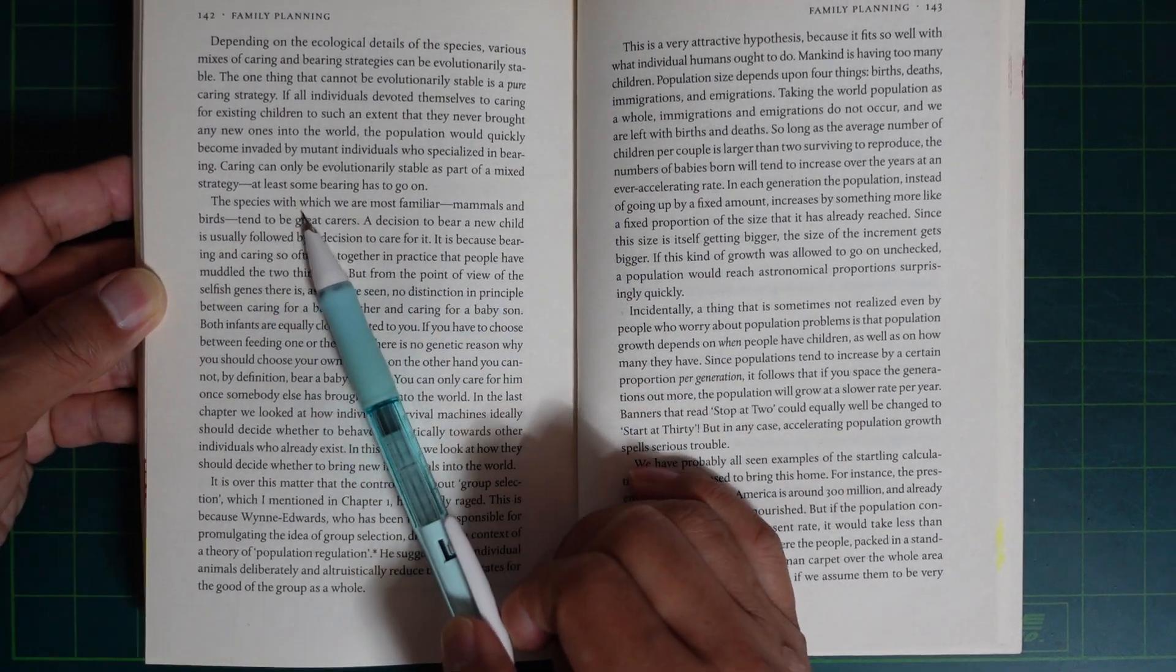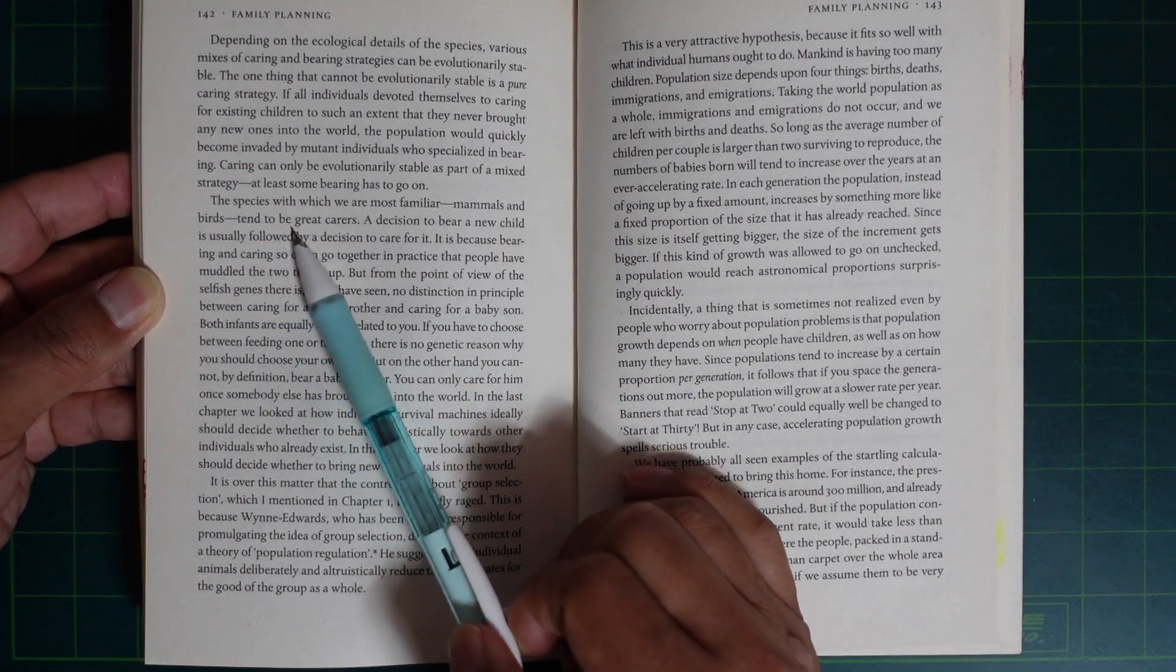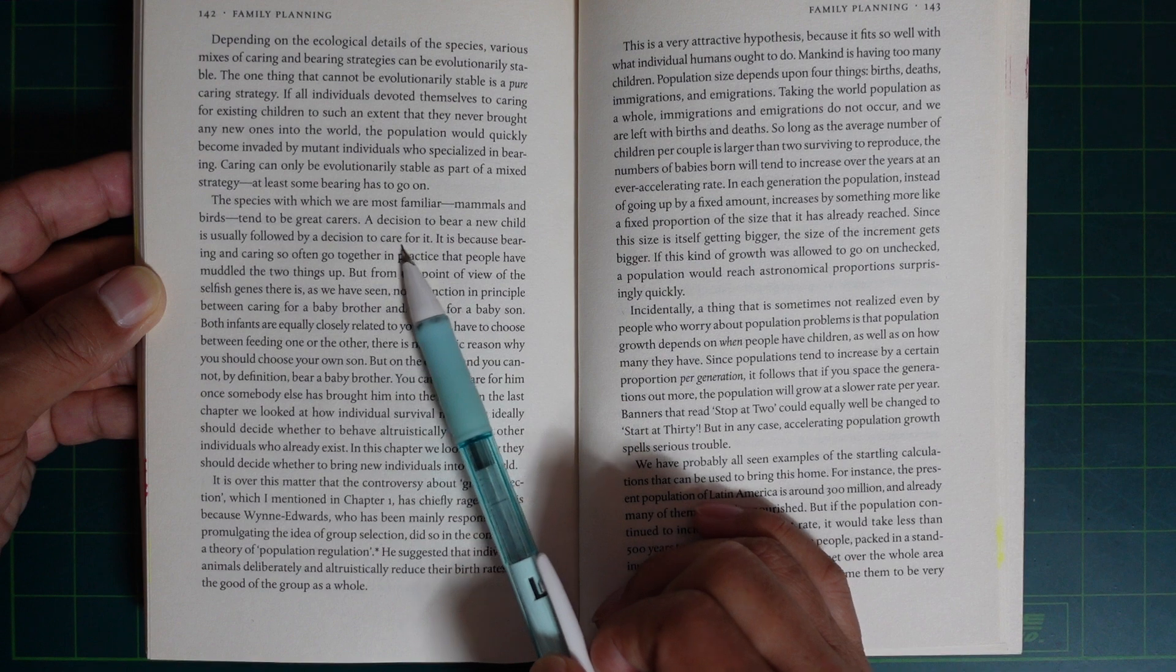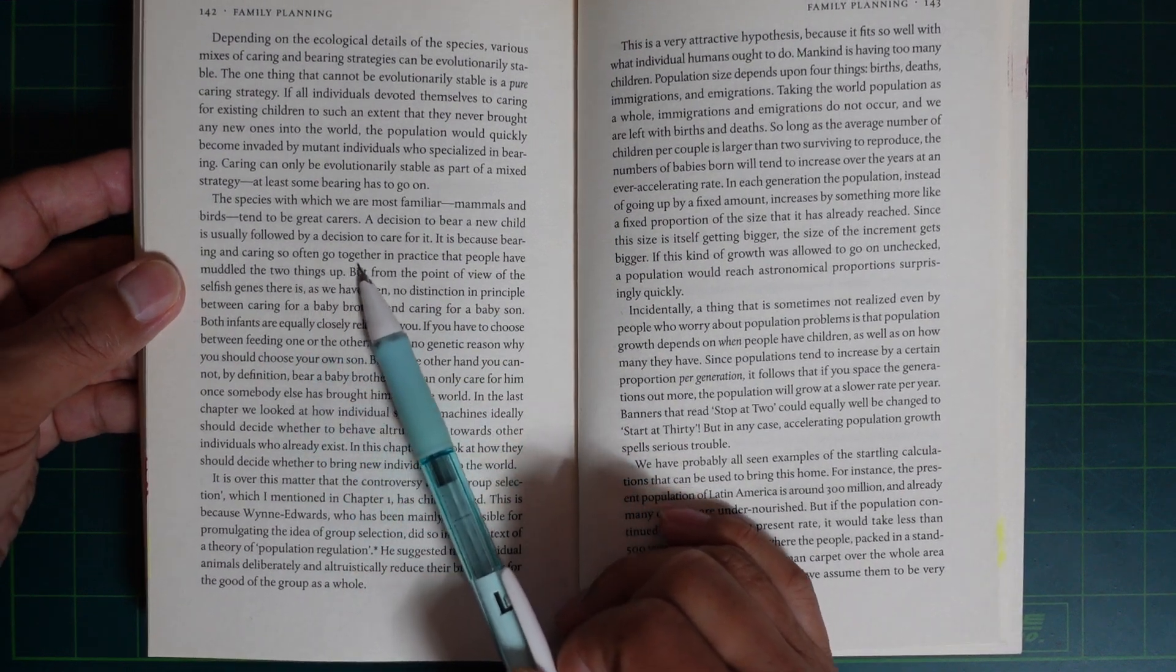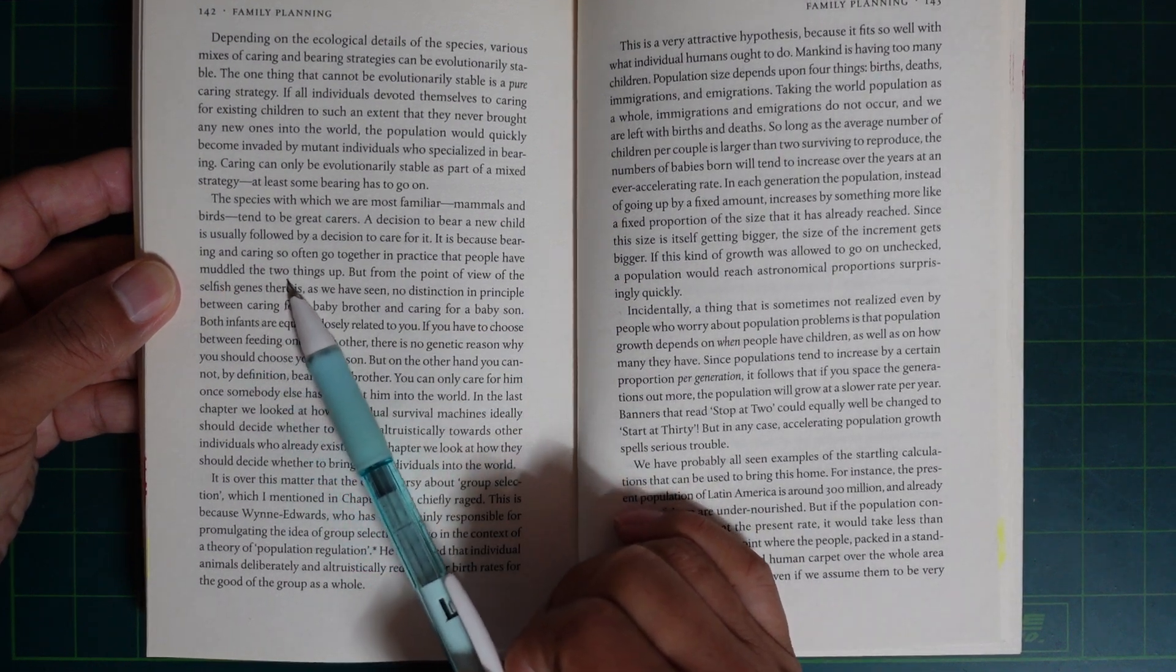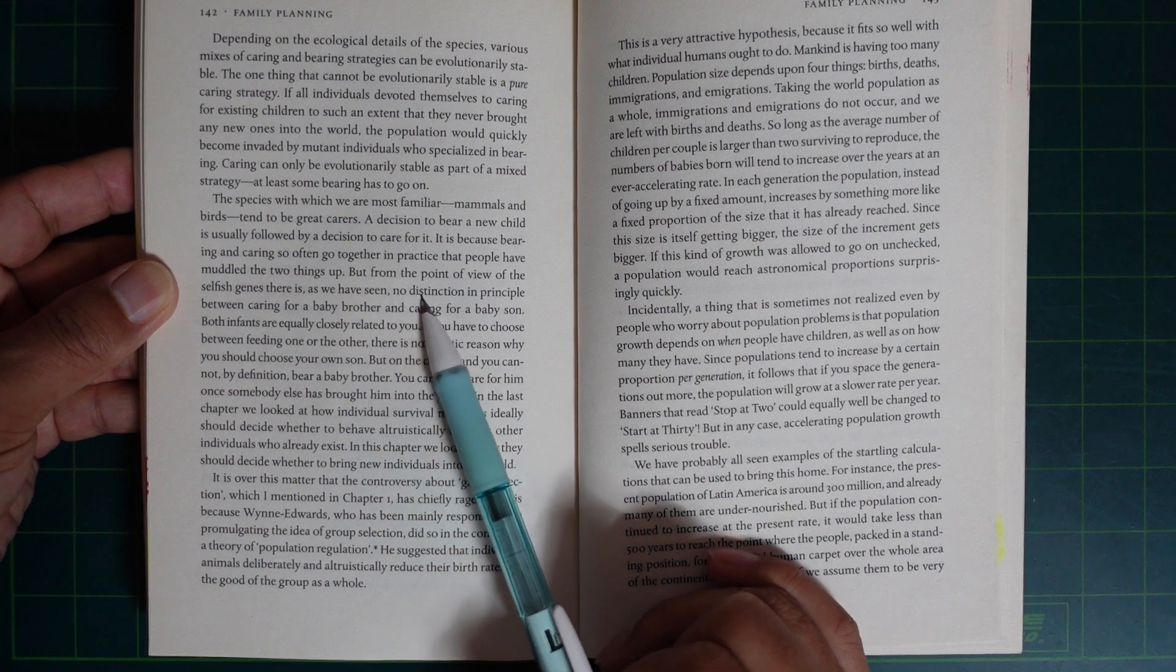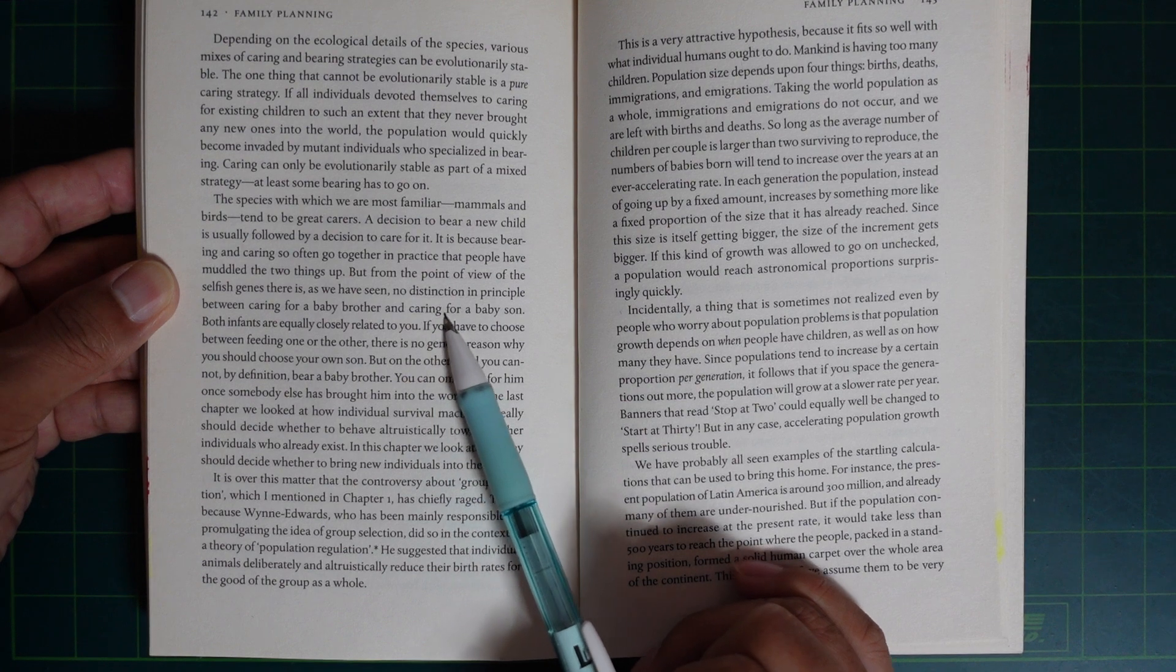Caring can only be evolutionarily stable as part of a mixed strategy. At least some bearing has to go on. The species to which we are most familiar, mammals and birds, tend to be great carers. A decision to bear a new child is usually followed by a decision to care for it.